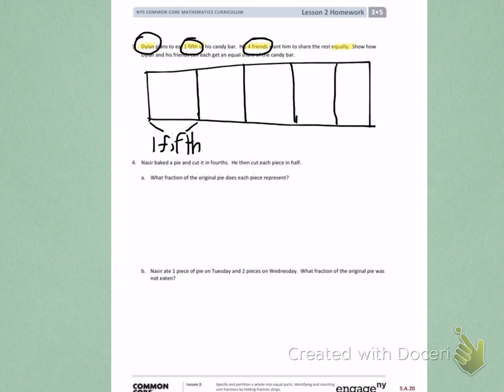Let's draw a picture to show what Nasir did. He baked a pie, so I'm going to draw a circle to represent the pie. Next, he cut that pie into fourths. Fourths are four equal parts. So I will carefully divide the pie into four equal parts.